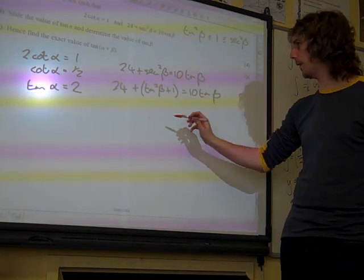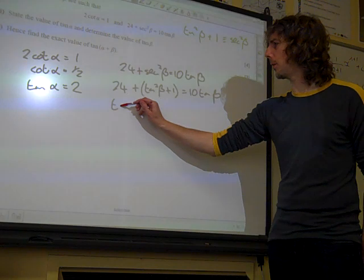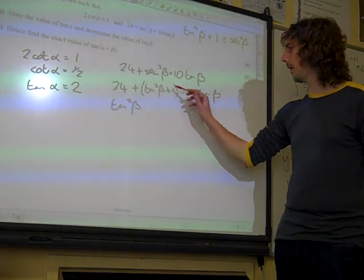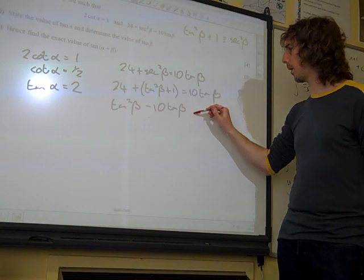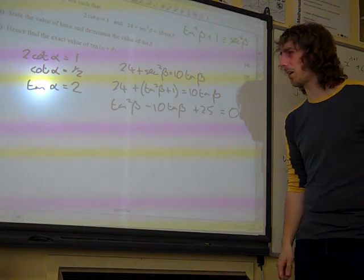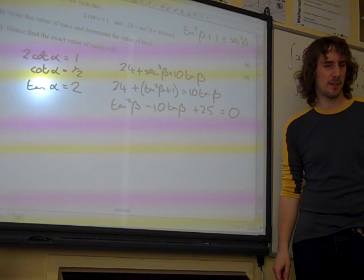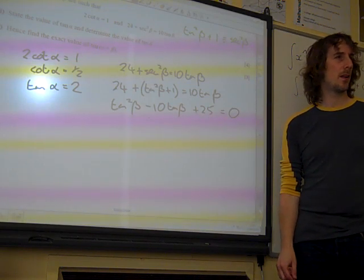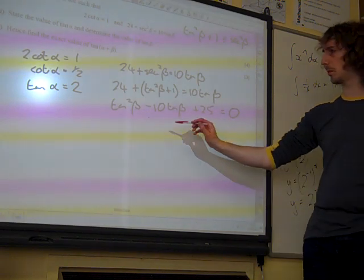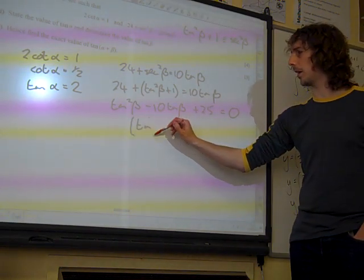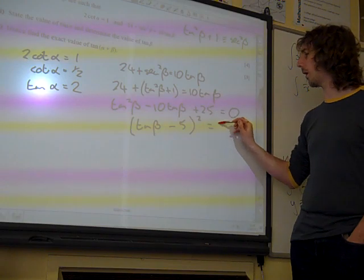We'll rearrange this now. What have we got? We've got tan squared beta minus 10 tan beta plus 25 is 0. Oh, that's quite nice, isn't it?